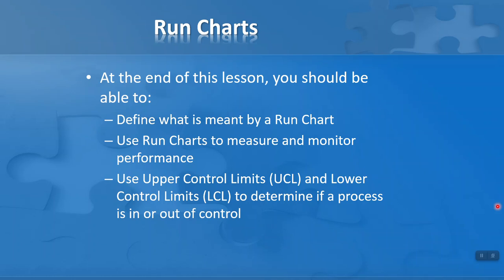Our objectives for this lesson are as follows. At the end of the lesson, you should be able to define what is meant by a run chart, use run charts to measure and monitor performance, and use upper control limits (UCL) and lower control limits (LCL) to determine if a process is in or out of control.